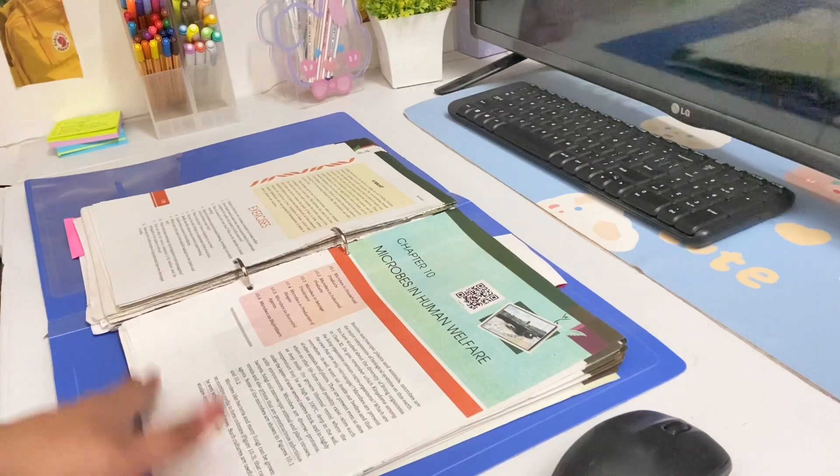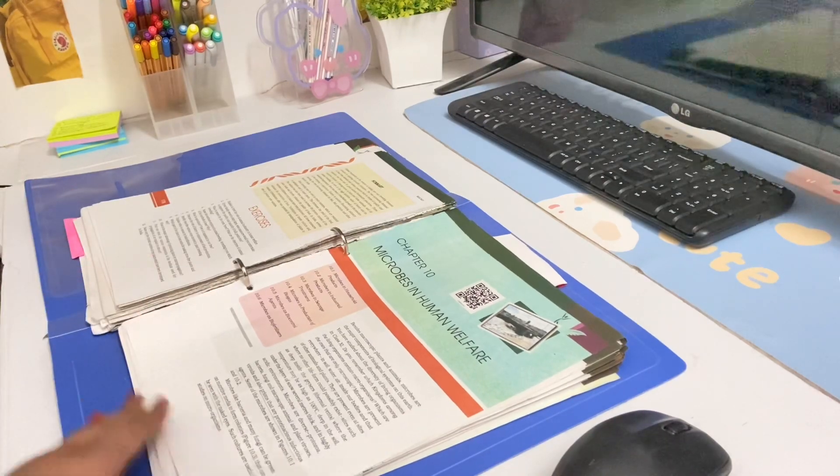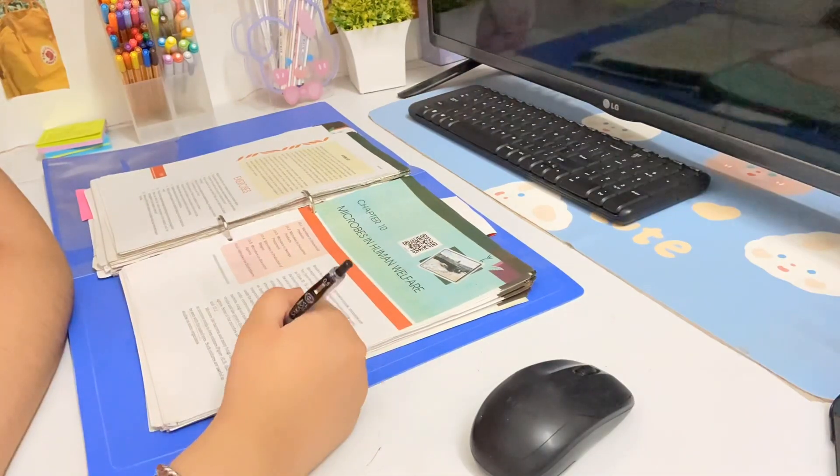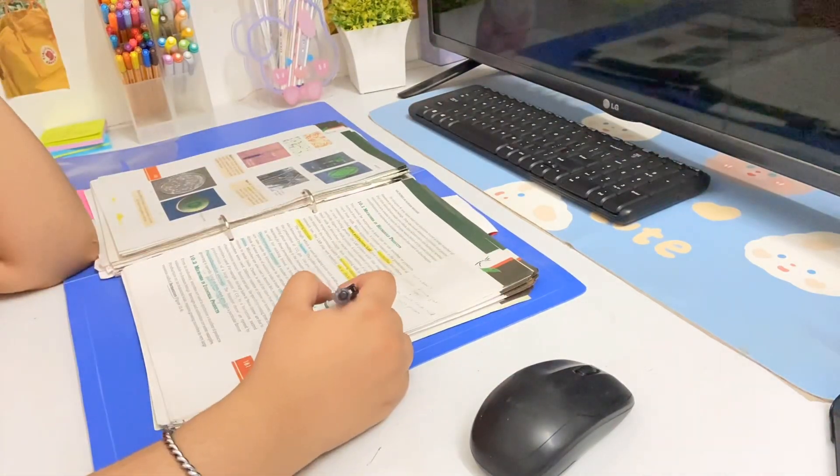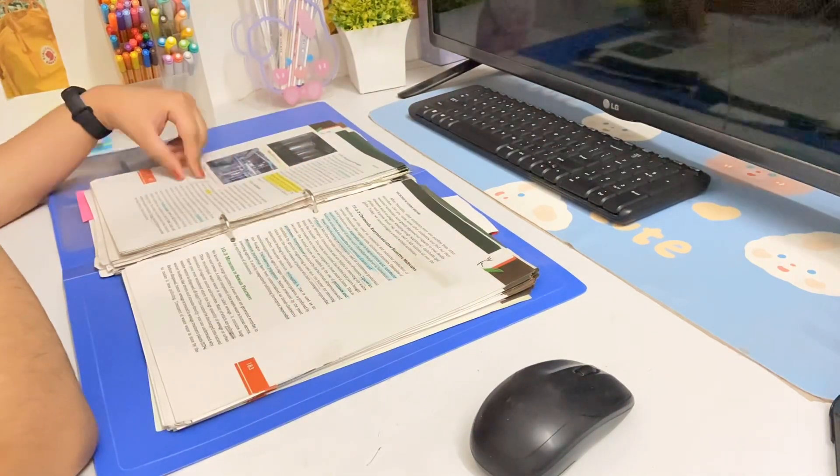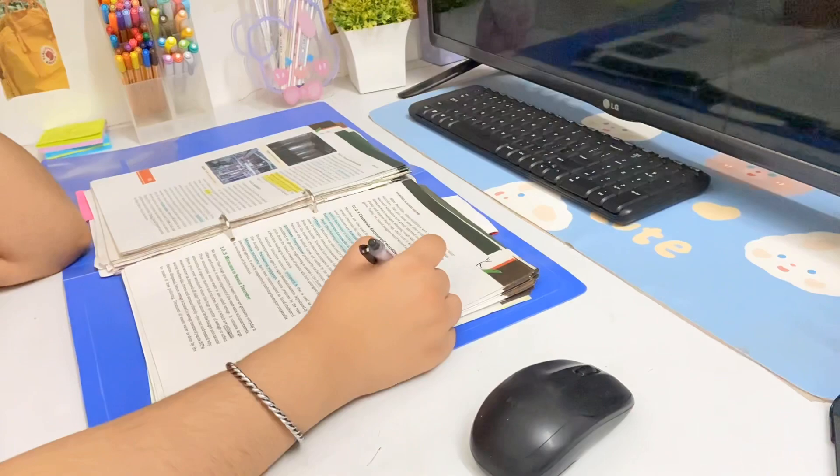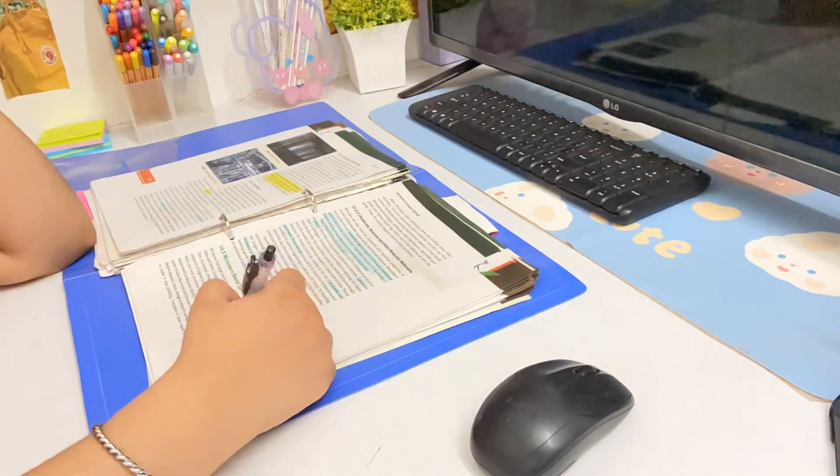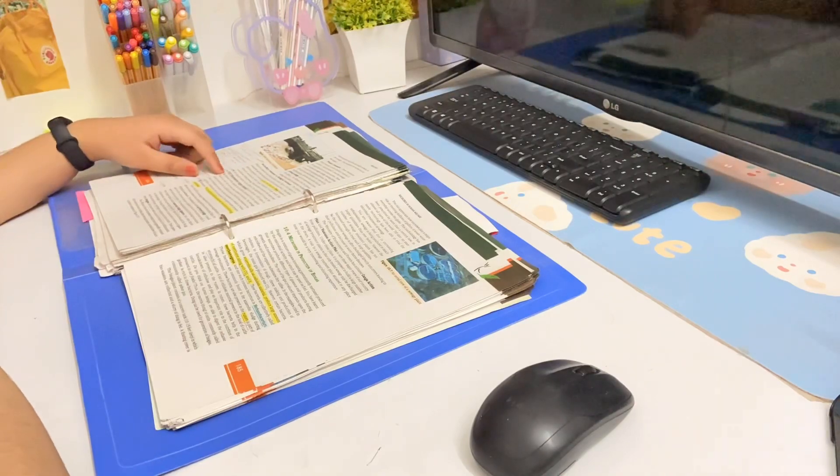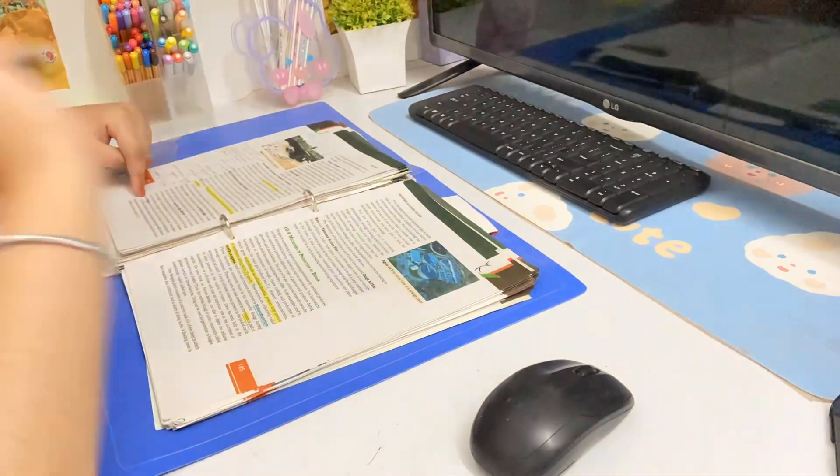So now I'm going to continue with the next chapter which is Microbes and Human Welfare. Right here I'm doing the chapter known as Microbes in Human Welfare and I think this is the easiest chapter from the entire biology syllabus. Since I have already done this chapter so many times earlier, it doesn't take me that much time as well.